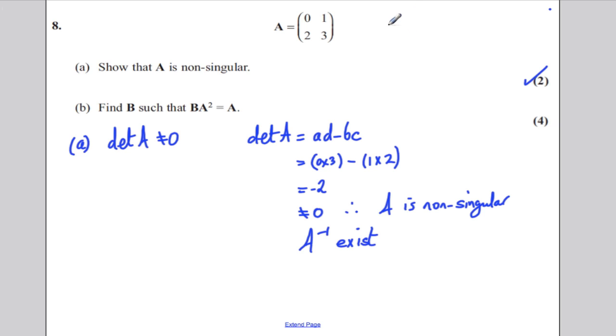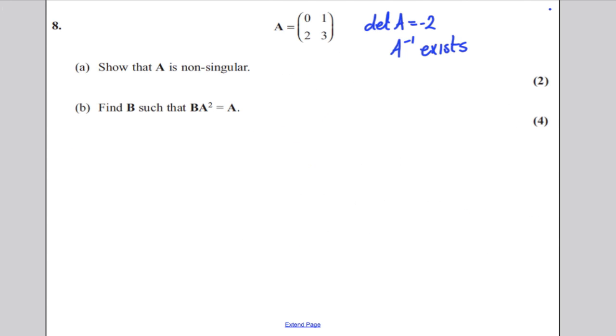The key thing we know is the determinant is negative 2, and it also means that A to the minus 1, its inverse, actually exists. So we're going to use that in part B. Part B says find B such that BA squared equals A.